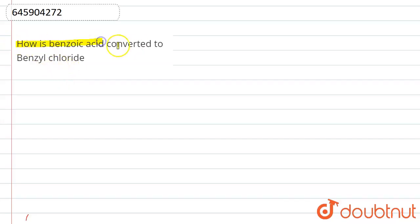How is benzoic acid converted to benzyl chloride? So what is benzoic acid? In benzene ring we will have a carboxylic acid, that will be called as benzoic acid. So from benzoic acid we have to convert to benzyl chloride. So this is benzoic acid.